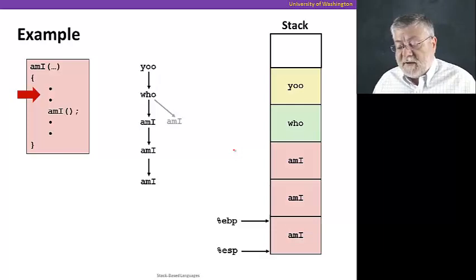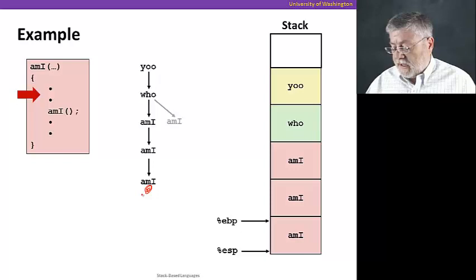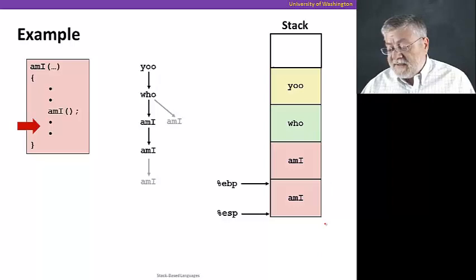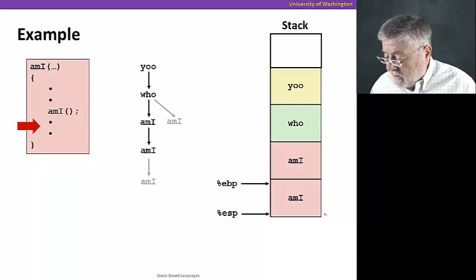And yet a third one as it calls itself yet again. So now we're at the bottom here of our call chain, and we're about to execute our first return in the third copy of mi. So when we do that, we remove its stack frame, put the EBP and ESP back to where they were for the previous instantiation of mi.